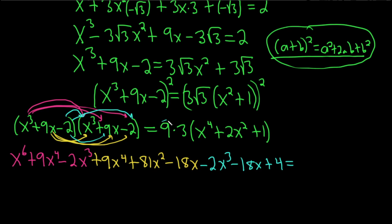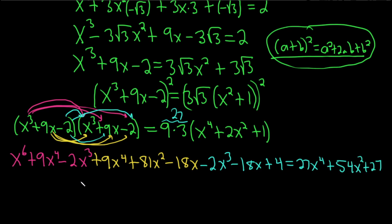On the right side, 9 times 3 is 27, so we have 27 times (x to the fourth plus 2x squared plus 1), which gives 27x to the 4th plus 54x squared plus 27. Now let's combine like terms on the left side.